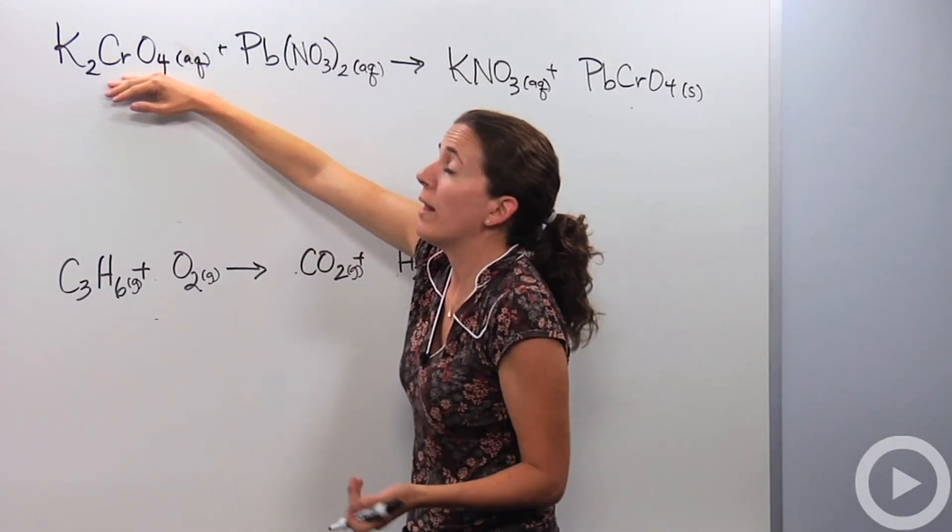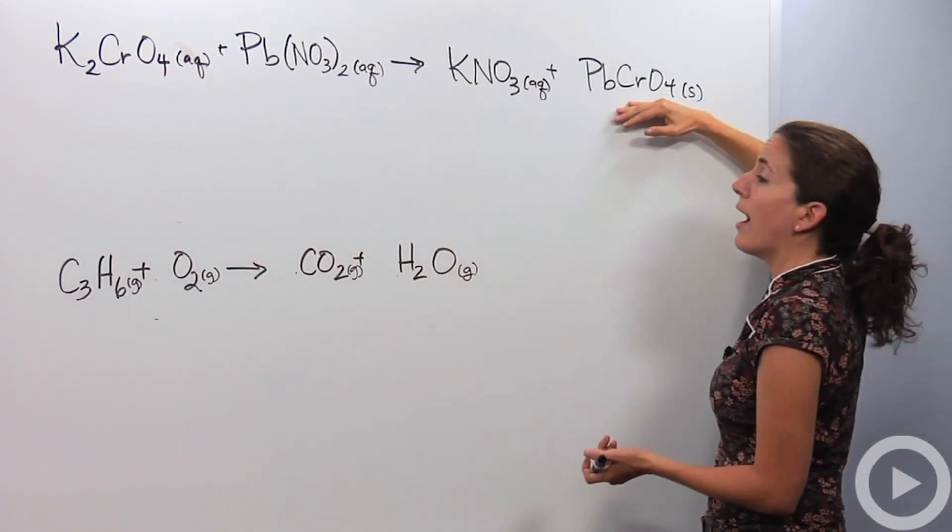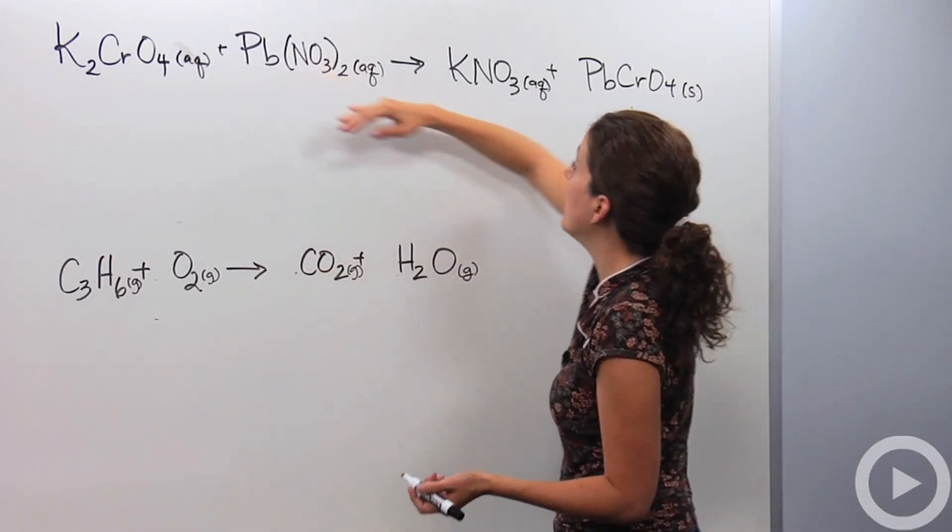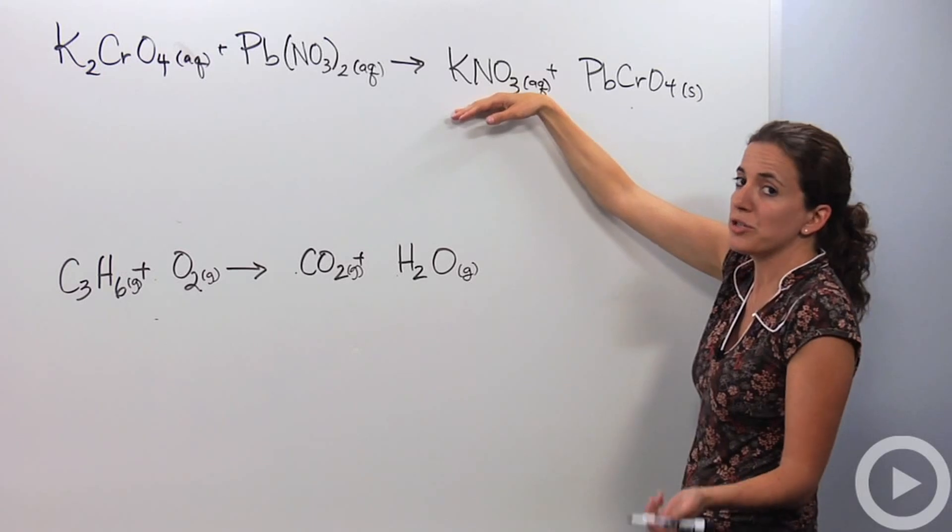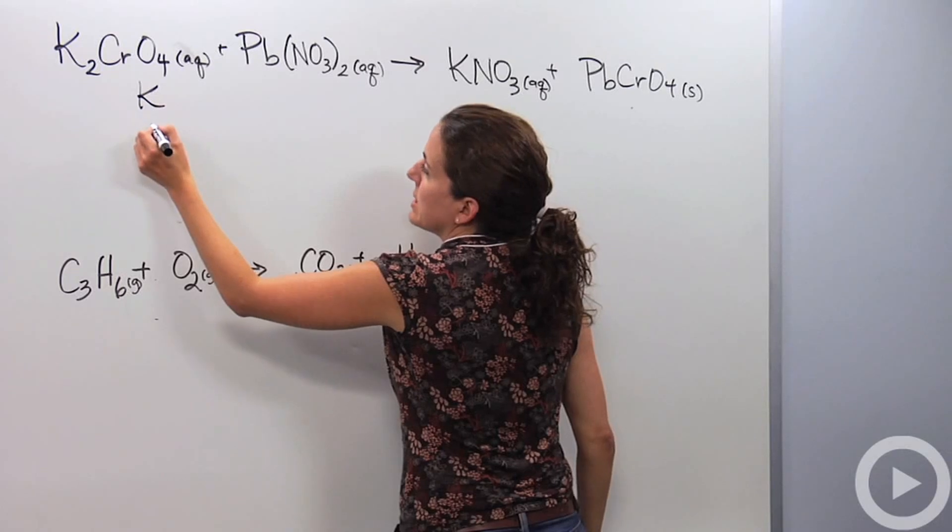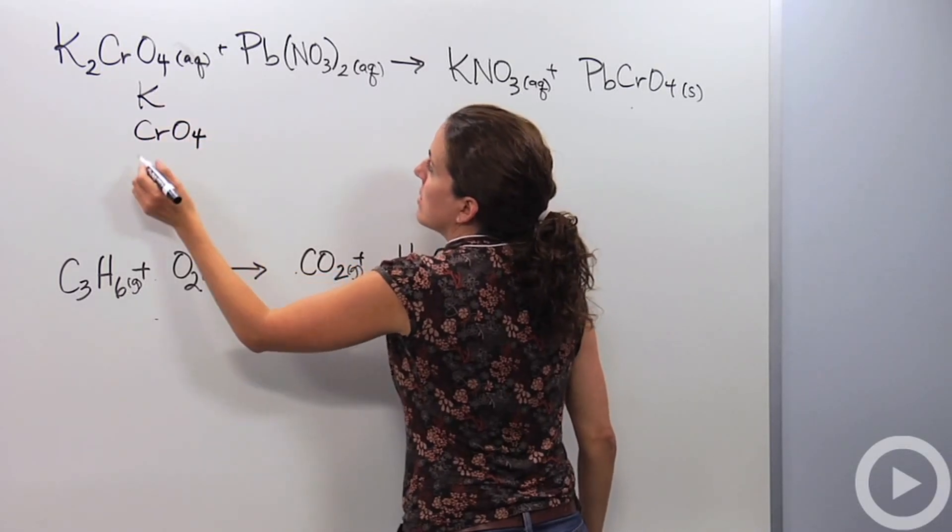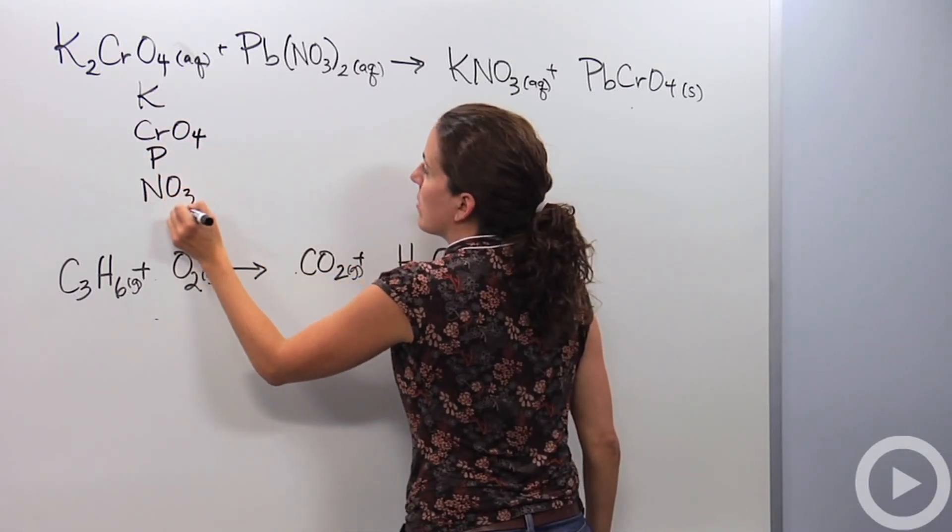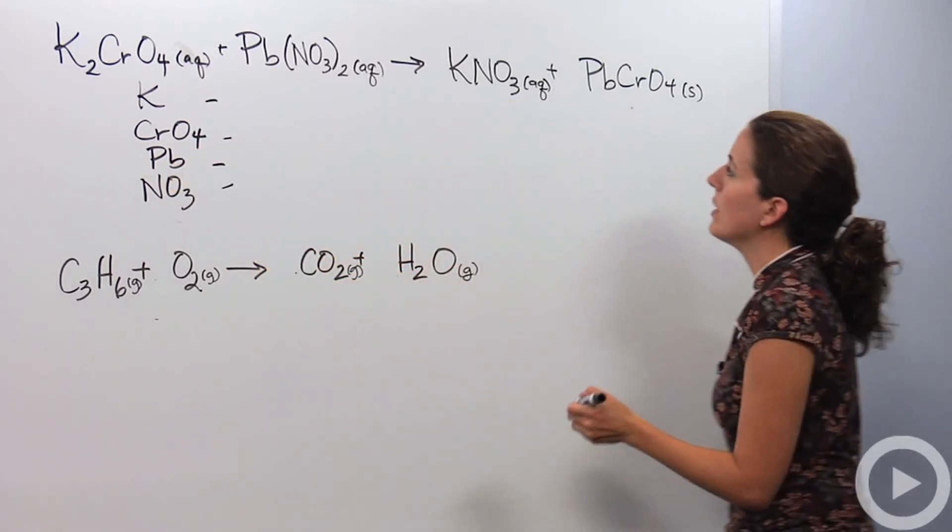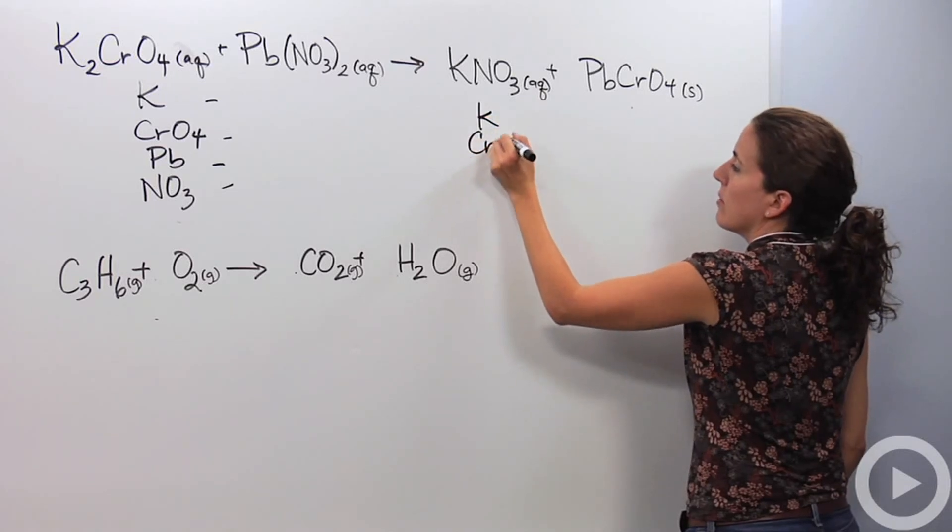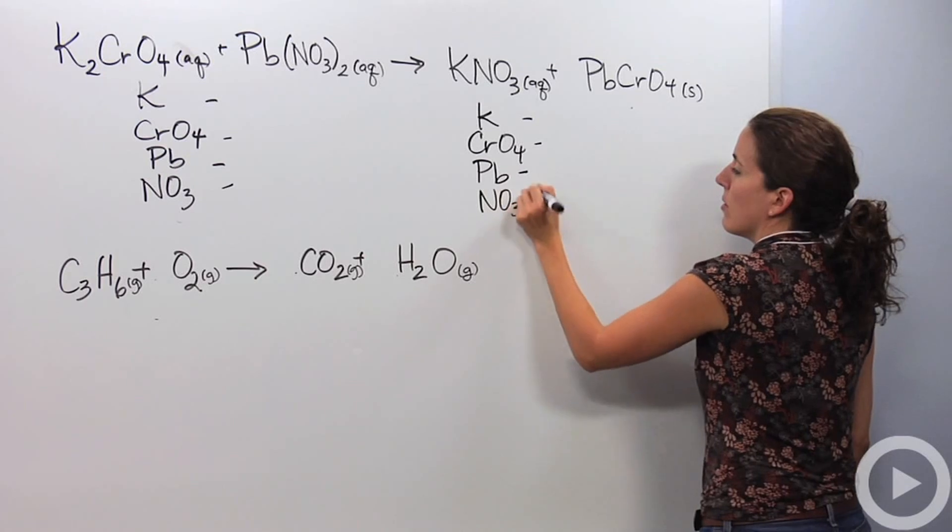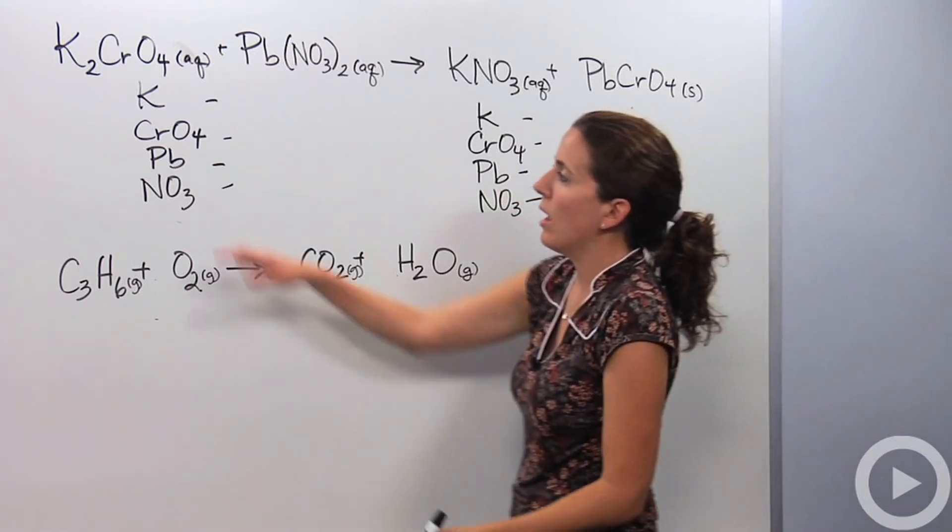We have a chromate polyatomic ion here. We also have a chromate polyatomic ion here. I can just keep those together. I also have a nitrate polyatomic ion here and a nitrate here. I don't have to separate the nitrogen and the oxygen out. I can keep them together since they're on the reactants and product side both. So I'm going to separate everything else out: potassium, chromate, lead, and nitrate. And I'm going to do the same thing on the product side.